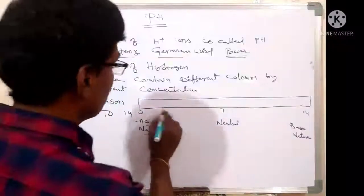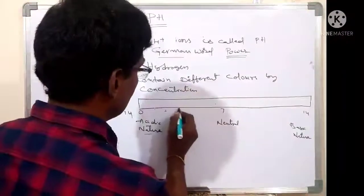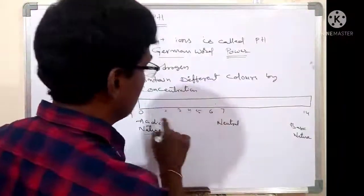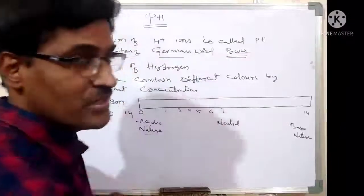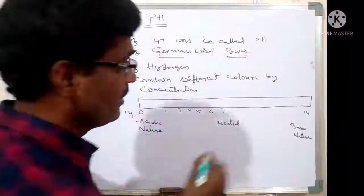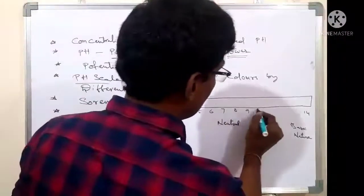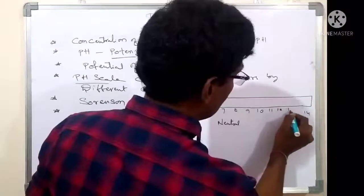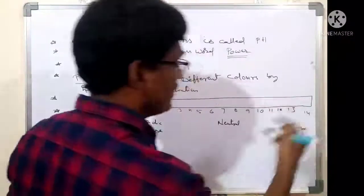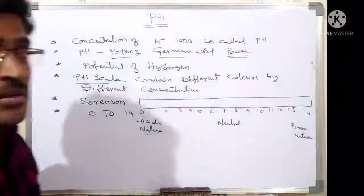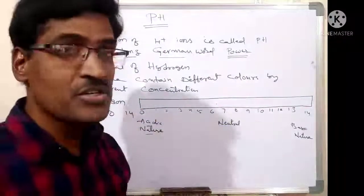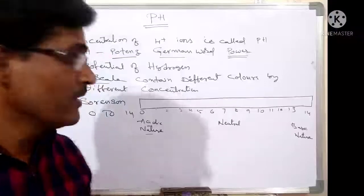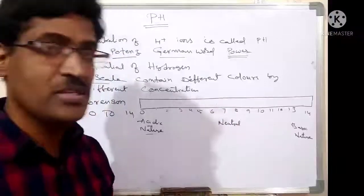Different concentrations are there — 1, 2, 3, 4, 5, 6 on the acidic side, and 8, 9, 10, 11, 12, 13 on the basic side. Different concentrations show different colors. That is the pH scale, introduced by Sorenson.